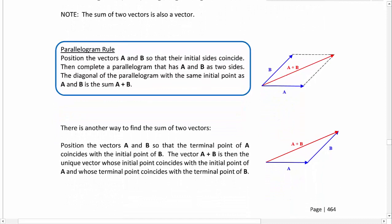Here we have parallelogram rule clearly stated. Position the vectors A and B so their initial sides coincide, their initial points. Then complete a parallelogram that has vector A and vector B as two sides. The diagonal of the parallelogram with the same initial point as A and B is the sum A plus B, or the resultant vector.